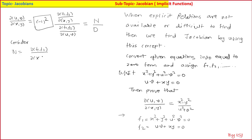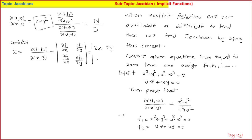Now let us calculate N = ∂(f1,f2)/∂(x,y). By the basic definition it is the determinant: [∂f1/∂x, ∂f1/∂y; ∂f2/∂x, ∂f2/∂y]. What is ∂f1/∂x? It is 2x. ∂f1/∂y is 2y. ∂f2/∂x is y. And ∂f2/∂y is x. That determinant gives 2x² − 2y², so taking 2 common: N = 2(x² − y²).